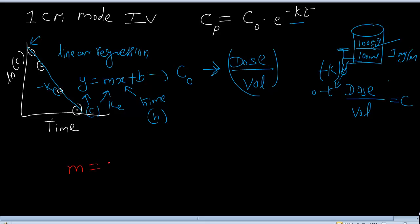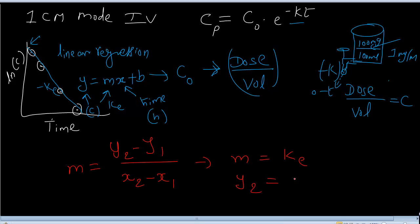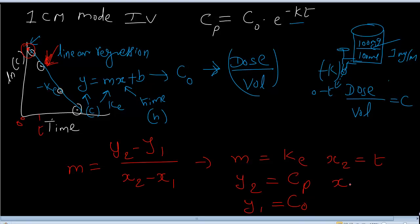What is the equation for slope? M is equal to y2 minus y1 over x2 minus x1. As I mentioned, it is the elimination rate constant, which is a negative value. y2 is the concentration Cp at any time point, and y1 is the initial concentration at time zero — that is C0. x2 is T and x1 is zero.